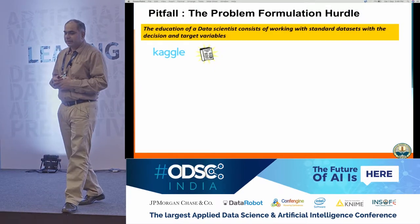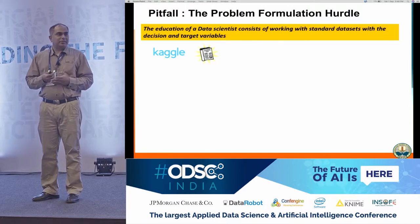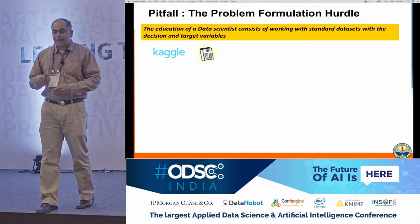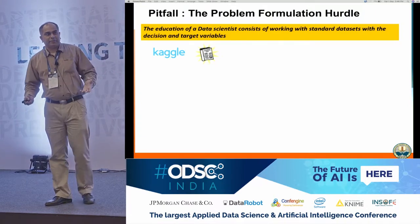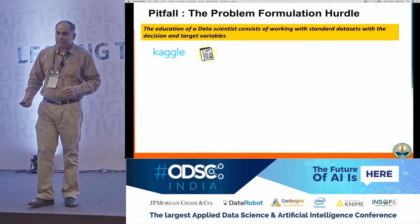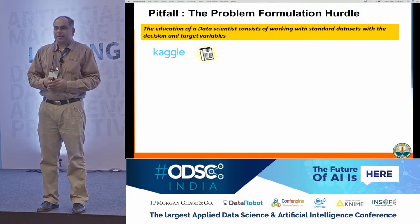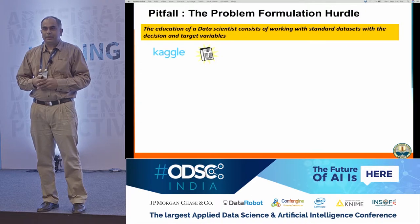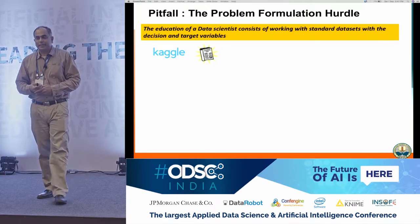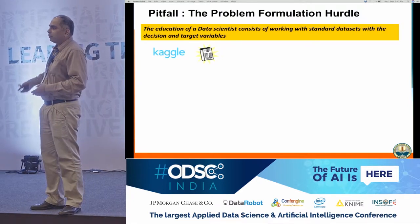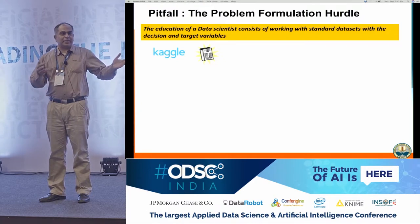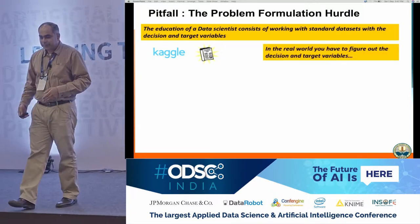How do you formulate the business problem? The challenge is that the education of data scientists today largely consists of working with standard datasets where you have decision variables and a target variable, and you say, okay, I got 1% higher accuracy than the other person on Kaggle. But in the real world, it's different. Nobody tells you what the objective or target variable is. The business problem says: make me more money, reduce my cost, help me do more with less people. You have to figure out what your decision variables are and what data is relevant.